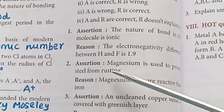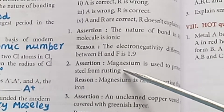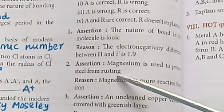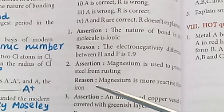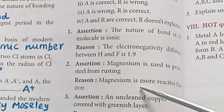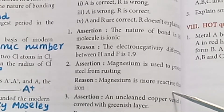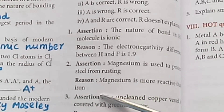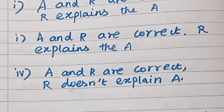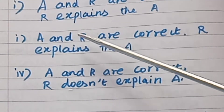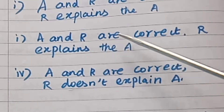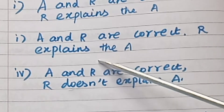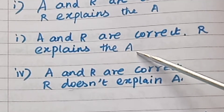Question 2 — Assertion: Magnesium is used to protect steel from rusting. Reason: Magnesium is more reactive than iron. Answer: Option 1 — A and R are correct, R explains the assertion.